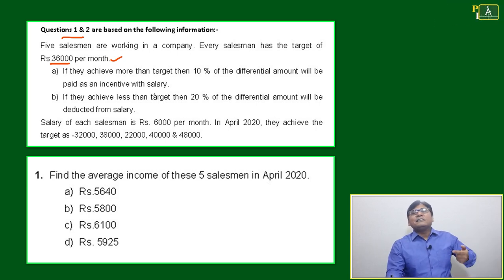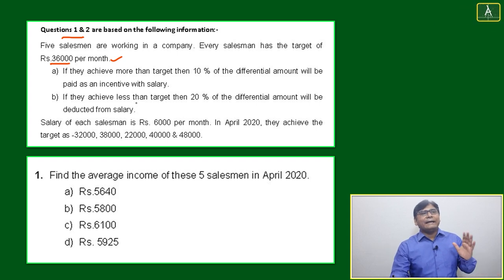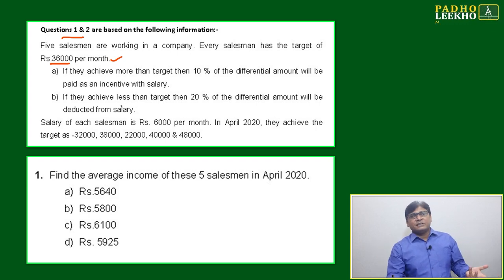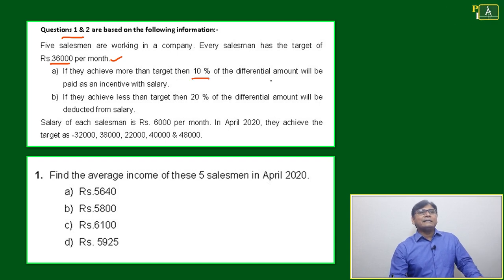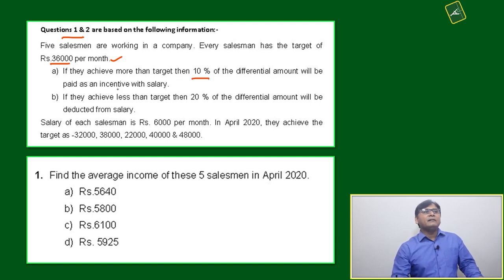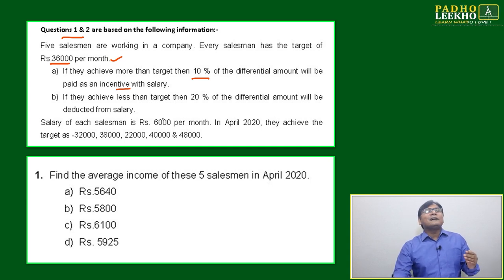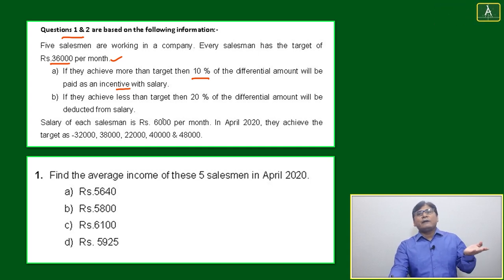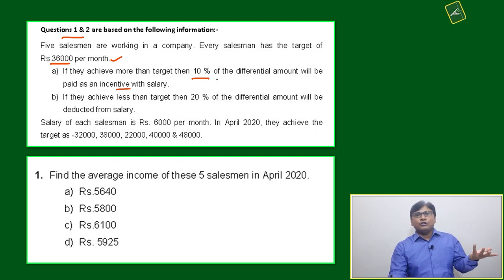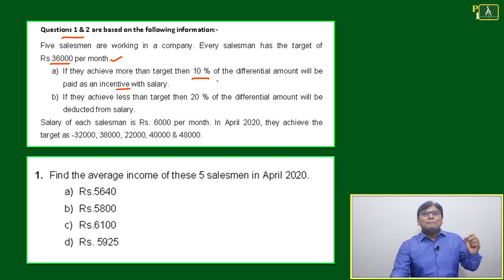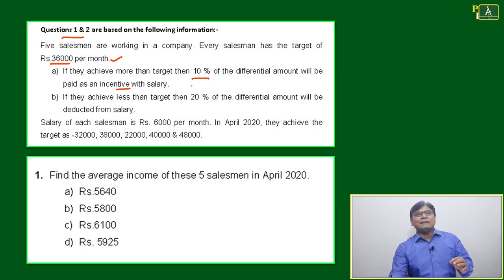If you are meeting above the target, you will get extra money in the form of an incentive. If they achieve more than the target, then 10% of the differential amount will be paid as an incentive with salary. For example, if you achieve 40,000 instead of 36,000, then 4,000 is the differential amount, and 10% of 4,000 means 400 extra as incentive.